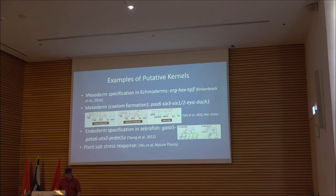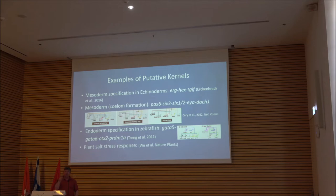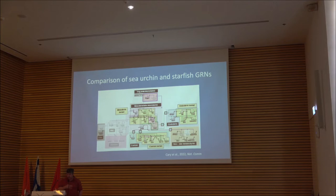These are four basic examples of papers which invoke kernels explicitly in their description of the gene regulatory network. The one I particularly like is the plant stress response to salt, which came out in Current Plant Biology about two years ago — but these have the same recursively wired structures that you see in a kernel.